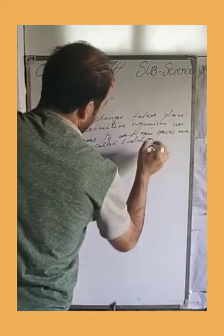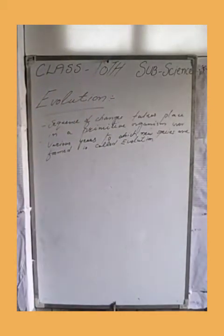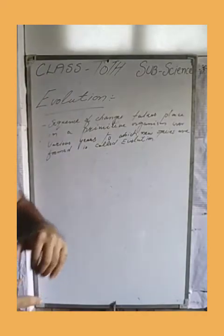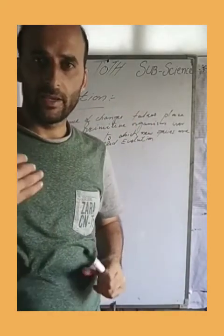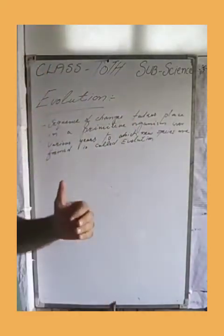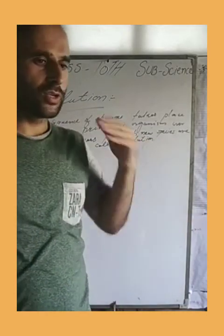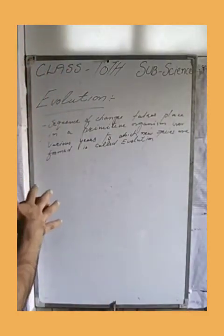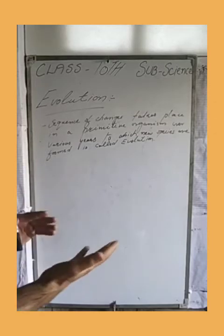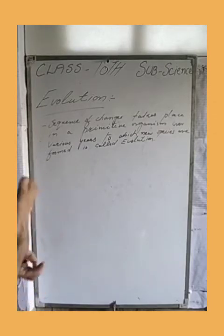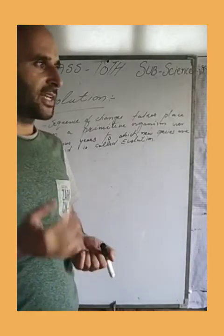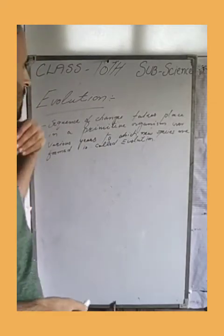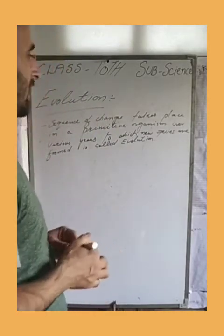Actually, evolution jo hai, evolution kaafi changes ka ek sequence hai, ek tartib hai, jo kisi primitive organism mein take place hoti hai. Primitive organisms hum un organisms ko kehte hain. Ye dos saal ki nahi balki ye millions of years mein aate hain. Toh isse kya hoti, isse nayi species banti hai. Isse ko hum evolution kehte hain.